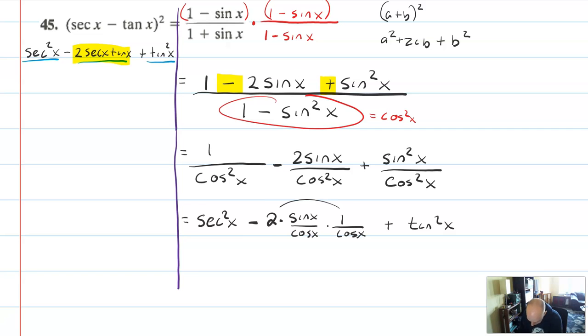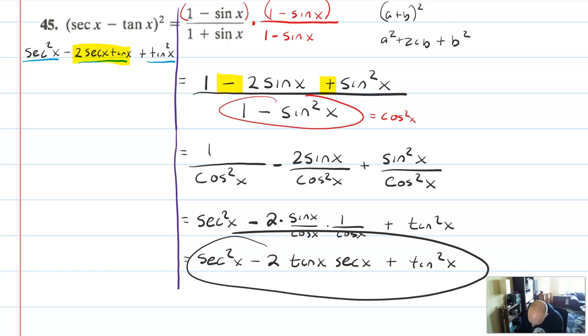I wouldn't have known to do this if I wasn't also looking at the other side and identifying my goal. So you have to look at both sides and kind of know where you're going. And then I think we're done. This is secant squared x minus 2 tangent x secant x plus tangent squared x. So I've shown that the left side is equal to the right side. The problem is solved.